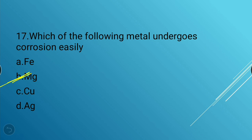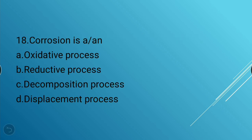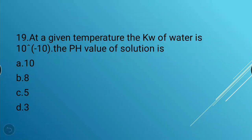Next question: Corrosion is which type of process? Options: oxidative, reductive, decomposition, or displacement. The answer is option A — corrosion is an oxidative process.